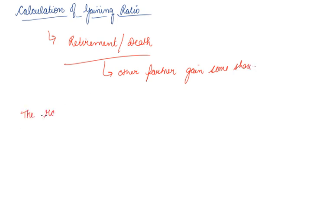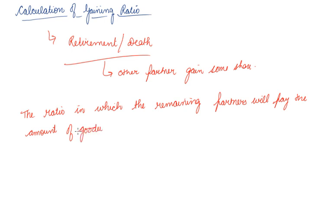The ratio in which the remaining partners will pay the amount of goodwill is called gaining ratio.